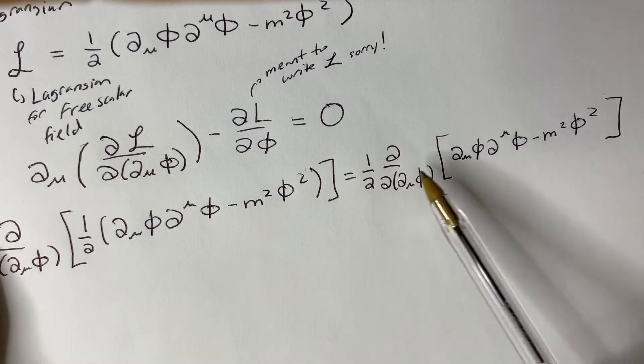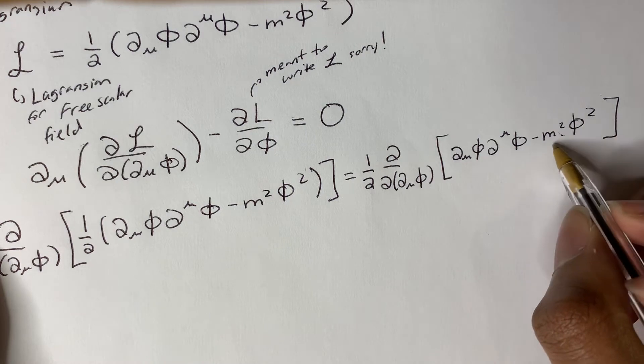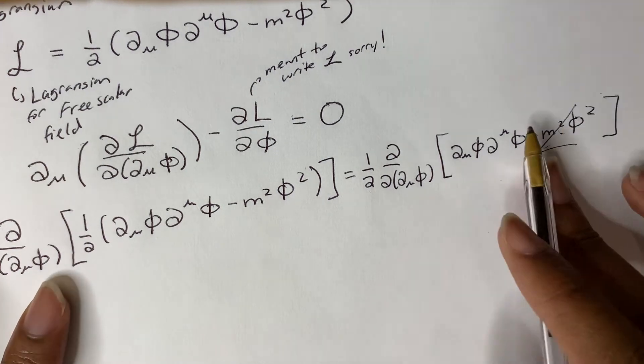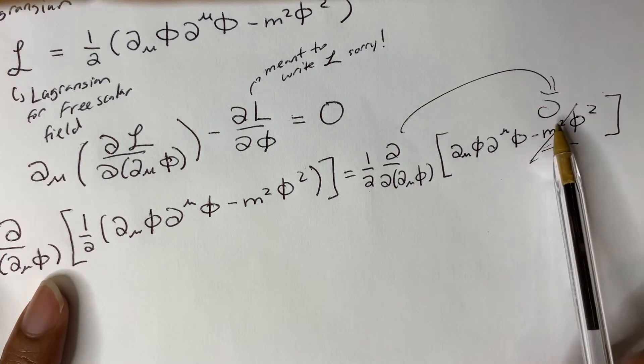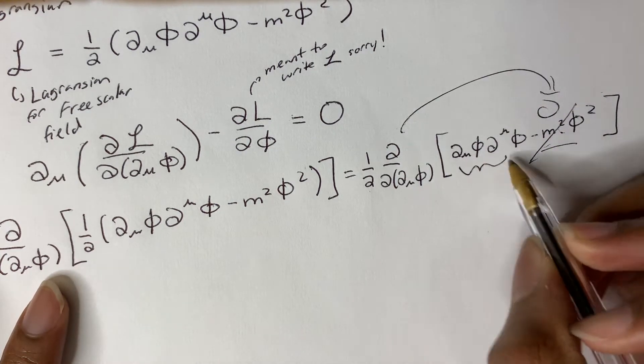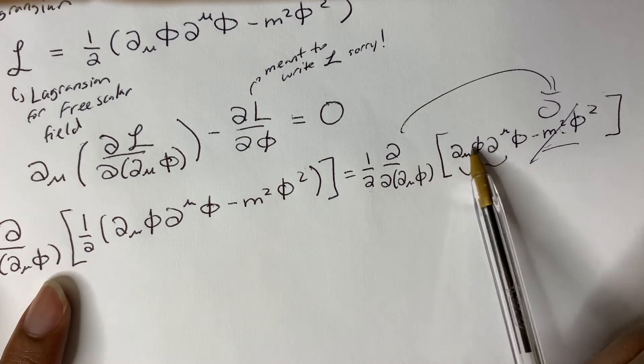So we are taking the partial derivative with respect to partial mu phi. There's no partial mu phi term here. So once you evaluate this partial derivative, it becomes zero. Well, what about this one? Here we do have a partial mu phi. In fact, it's repeated twice.